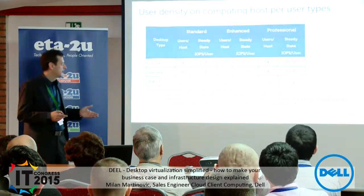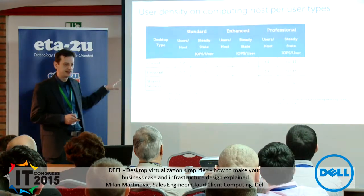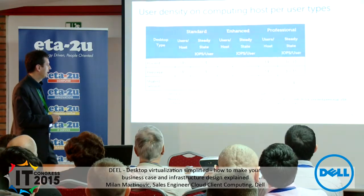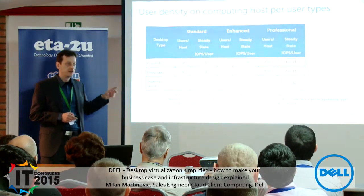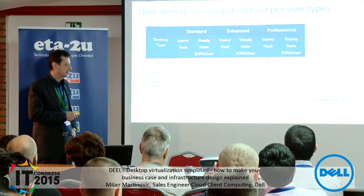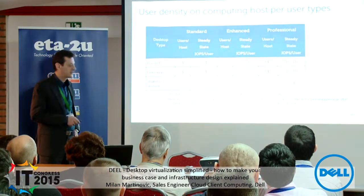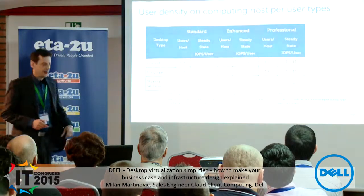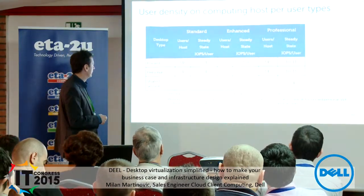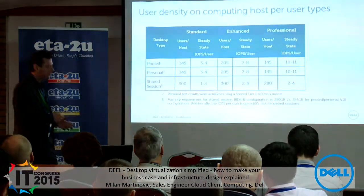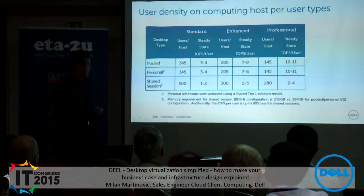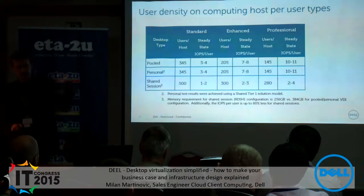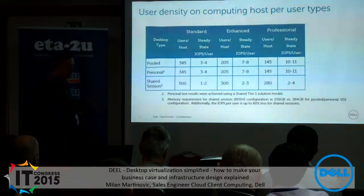This shows how user types translate to server sizing on an R730 rack-mount server. For shared session (RDSH) scenario, we can have the highest density: up to 500 standard users, 300 enhanced users, or 280 professional users per server. For full VDI, on the same hardware: 345 standard users, 205 enhanced users, or 145 professional users. These numbers are used in the following slides showing four different virtualization scenarios across four different user-count sizes.